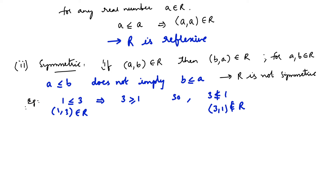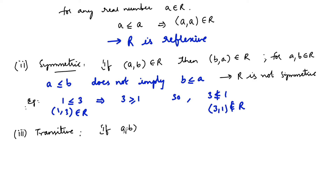Now let us check the third property — transitive. The condition for transitive is: if (a, b) belongs to R and (b, c) belongs to R, then we have to prove that (a, c) must belong to R.